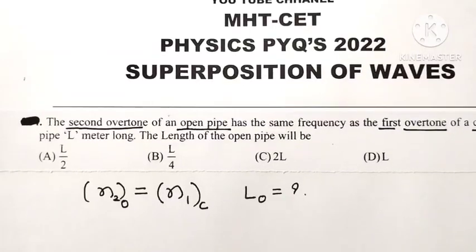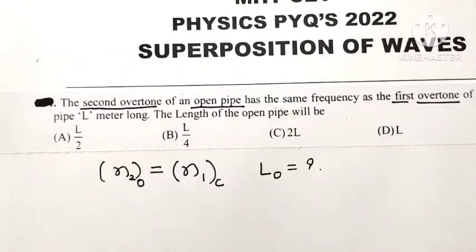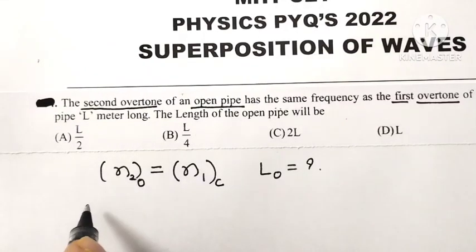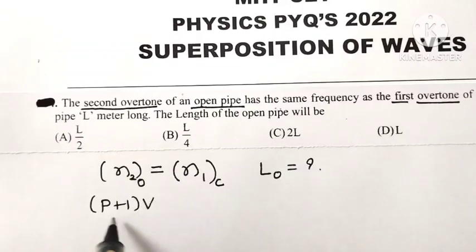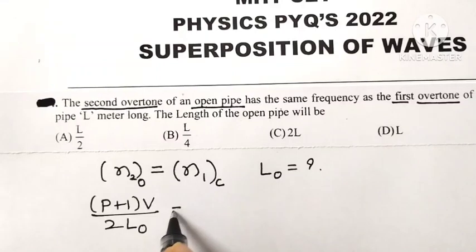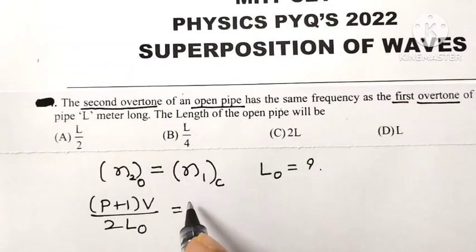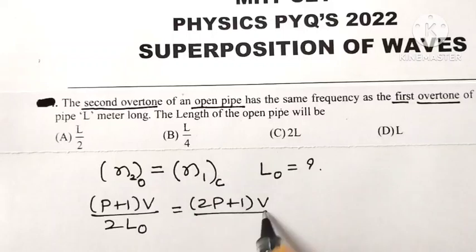See here, the frequency of the p-th overtone of an open pipe is given by (p+1)v divided by 2 times the length of the open pipe. And the frequency of the p-th overtone of a closed pipe is (2p+1)v divided by 4 times the length of the closed pipe.